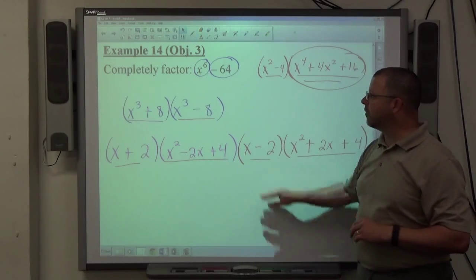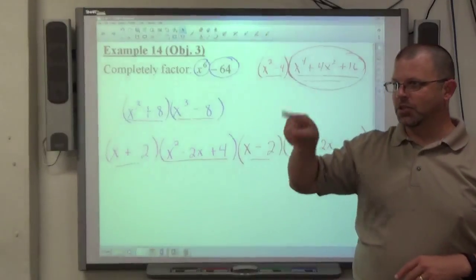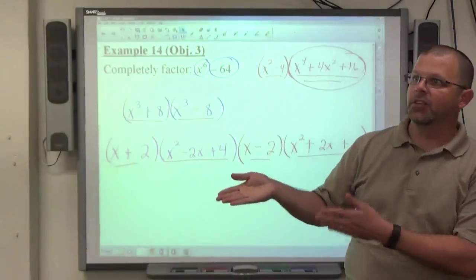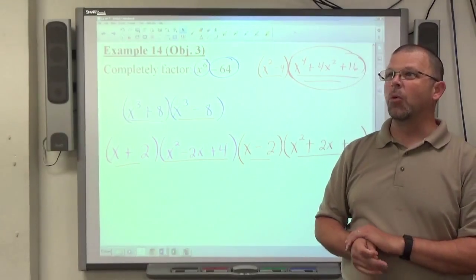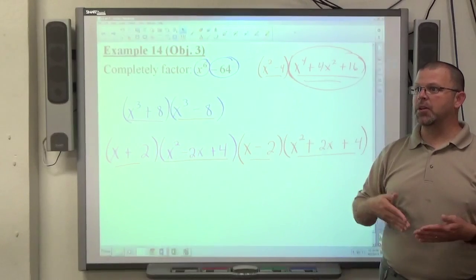All right, so always do difference of squares first, followed by sum or difference of cubes. Make that your checklist. Check off difference of squares. If it is, go ahead. If it isn't, move on to the next one. For example, 1 plus Y to the 12, I think was one of the homework problems.